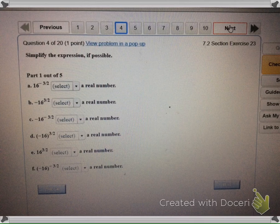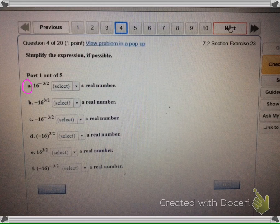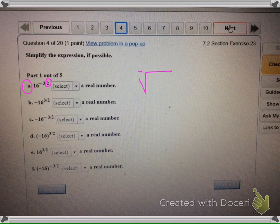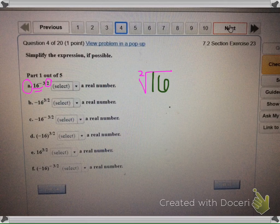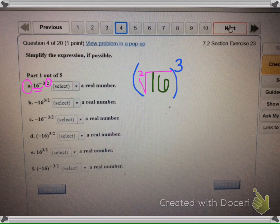If we look at part a, this is saying the index, the denominator, is a 2 on all of these, so all of them are going to have an index of 2. Remember we don't need to write that since it's a 2. Then 16 goes on the inside and then the 3 goes around.